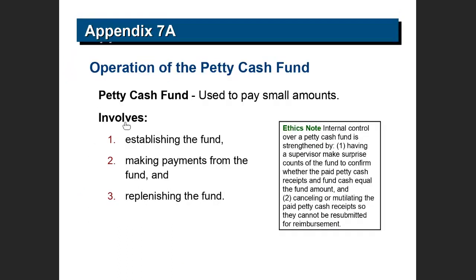The last concept is petty cash, which was one of the two controls of disbursement we discussed — one was the voucher, the other is petty cash. Petty cash is a small amount of cash kept on location to pay for small purchases.